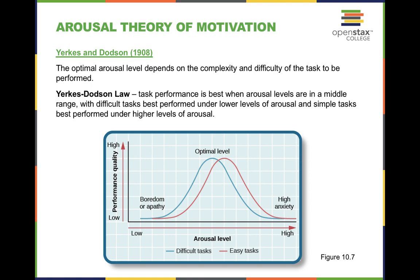Let's finish this theory by talking about the Yerkes-Dodson law. Whenever we're in a highly anxious situation, our ability to perform and operate as best we can tends to become compromised. For example, in an athletic event like basketball, the pressure from the crowd, your coach, or teammates can hinder your ability to operate at your best. Tasks are performed best when arousal levels are in the middle range of a bell curve, with difficult tasks best performed under low arousal and simple tasks under higher arousal.